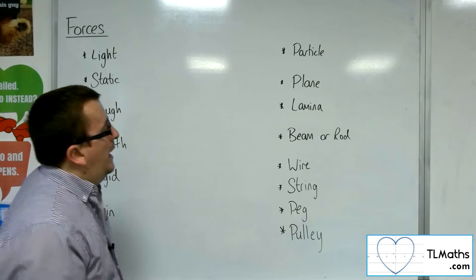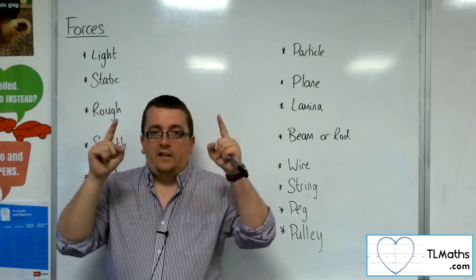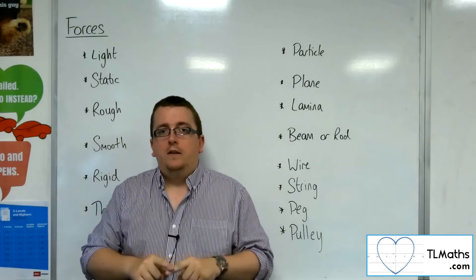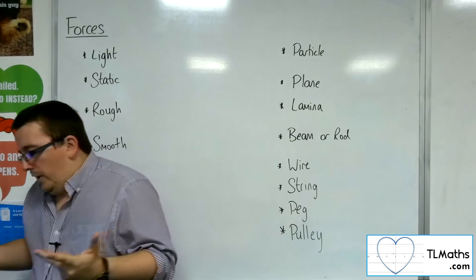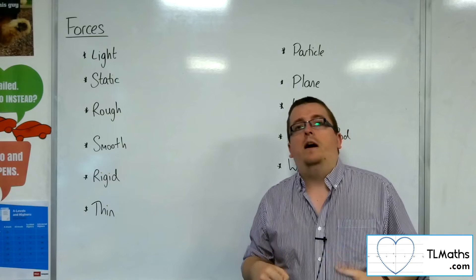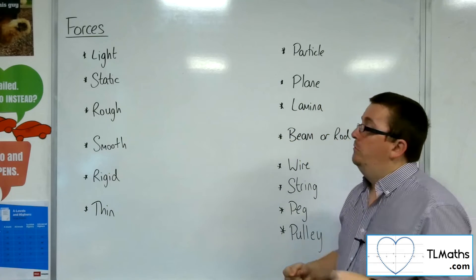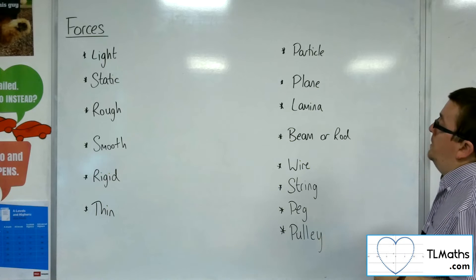A lamina, a lamina is a 2D object, for example, like a rectangle. It's flat, thin, it could be like a sign that's being held up in position, for example, something like that.